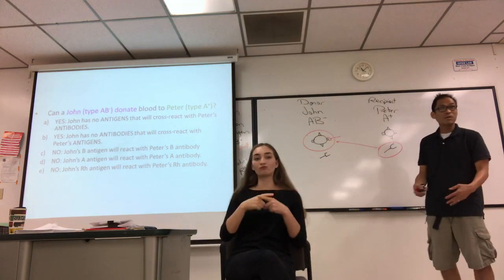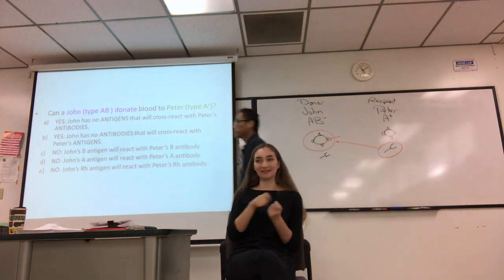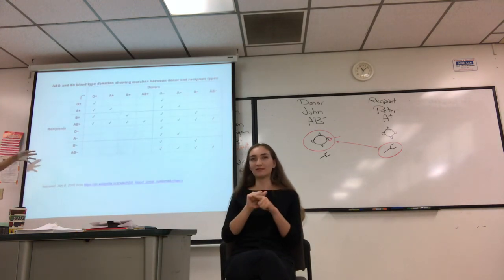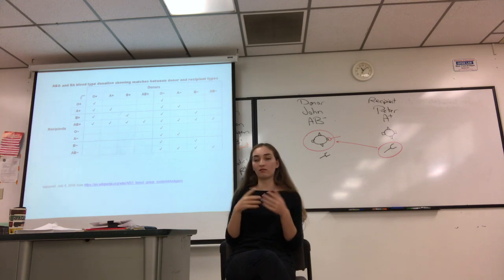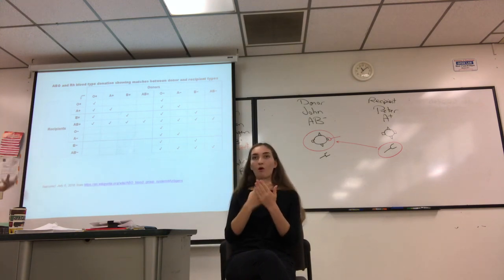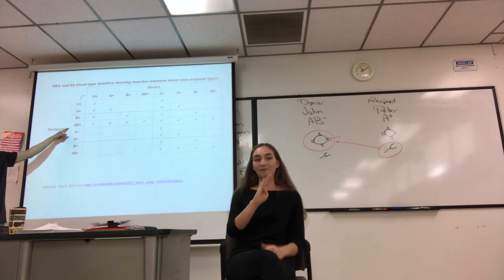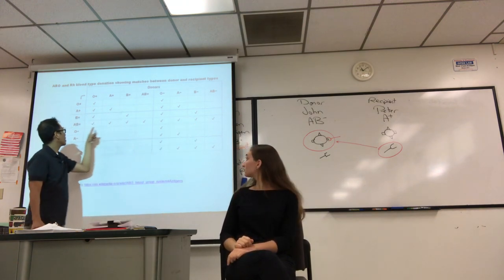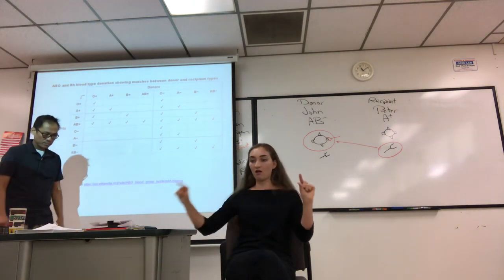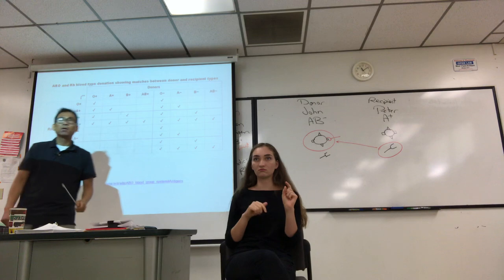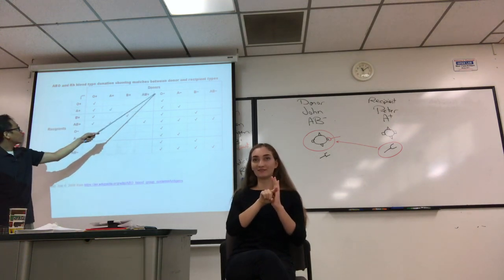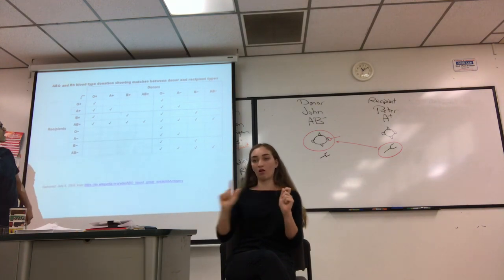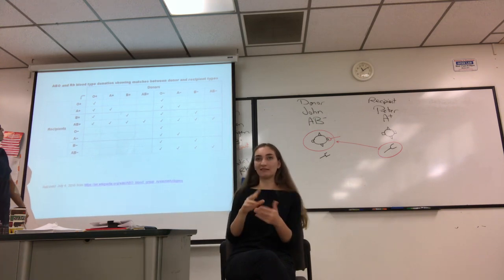On an exam, you must tell me what cross-reacts — not just that there's a cross-reaction. The table shows all blood types as recipients and donors. Look at AB positive recipient — it can receive from all blood types. O negative is the universal donor — it can donate to all types.